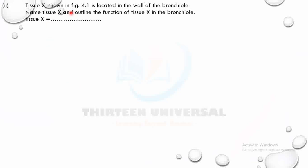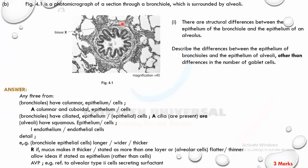Tissue X shown in figure 4.1 is located in the wall of the bronchiole. Name tissue X and outline its function. Tissue X appears to be smooth muscle. Smooth muscle contracts and relaxes to regulate the diameter of the airway, controlling the flow of air to and from the alveoli.